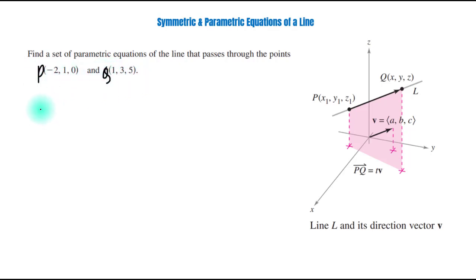So, direction vector along PQ is called vector PQ, and we can find it by subtracting corresponding components, that means 1 plus 2, 3 minus 1, 5 minus 0, which equals (3, 2, 5).